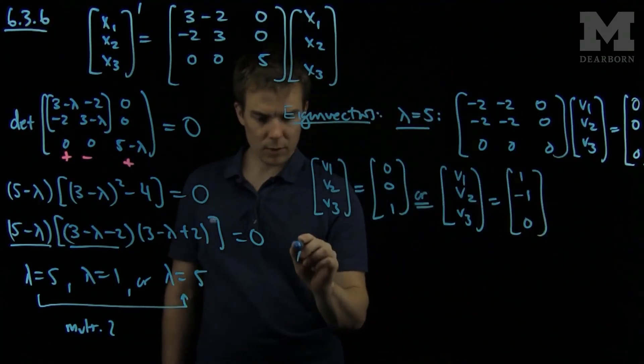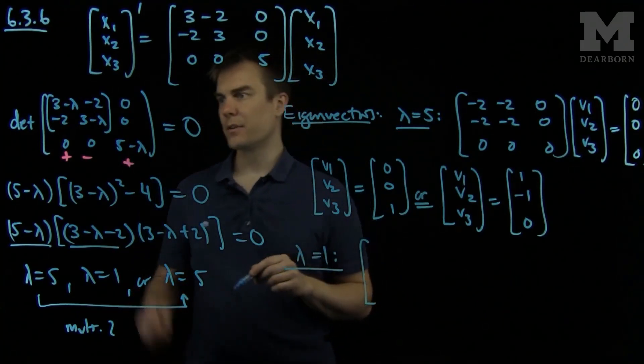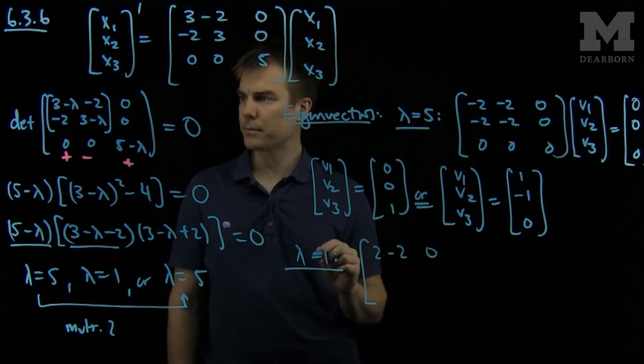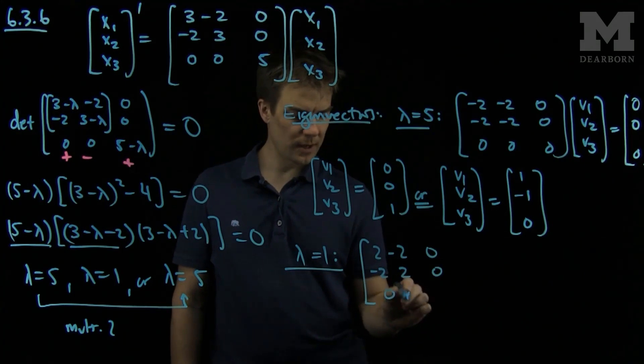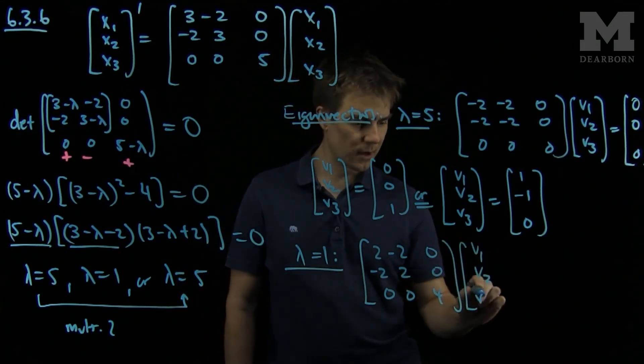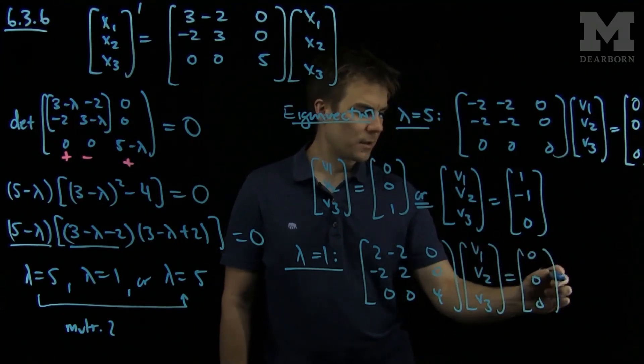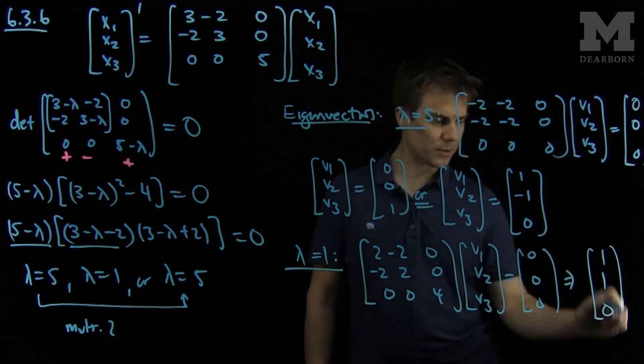The eigenvector corresponding to λ = 1 will require us to find an element of the null space of this matrix, which will be [2, -2, 0; -2, 2, 0; 0, 0, 4]. We can see that an element of the null space of this matrix can be found by choosing [1, 1, 0].